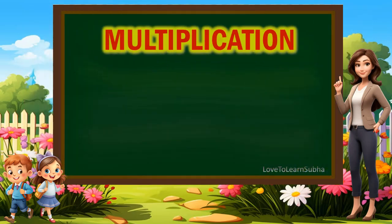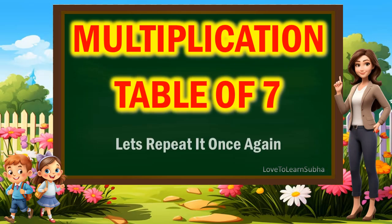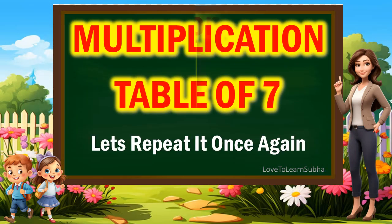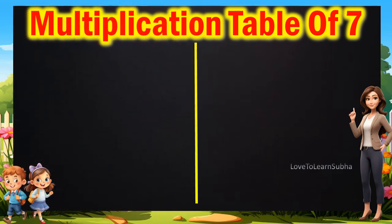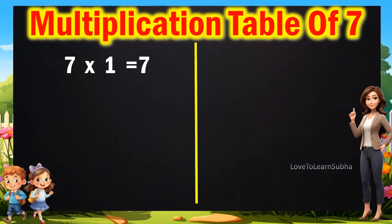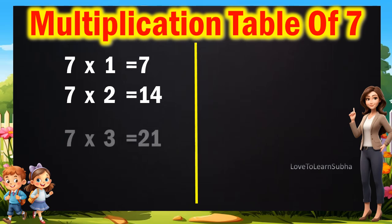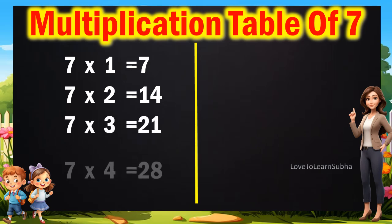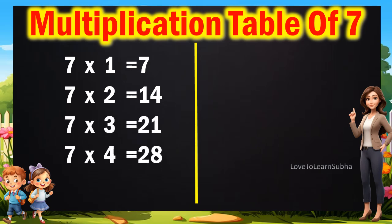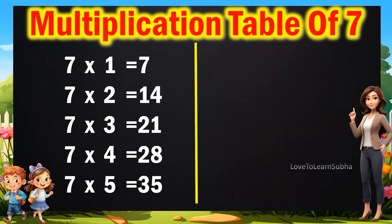Now, let's repeat it once again. 7 ones are 7, 7 twos are 14, 7 threes are 21, 7 fours are 28, 7 fives are 35.